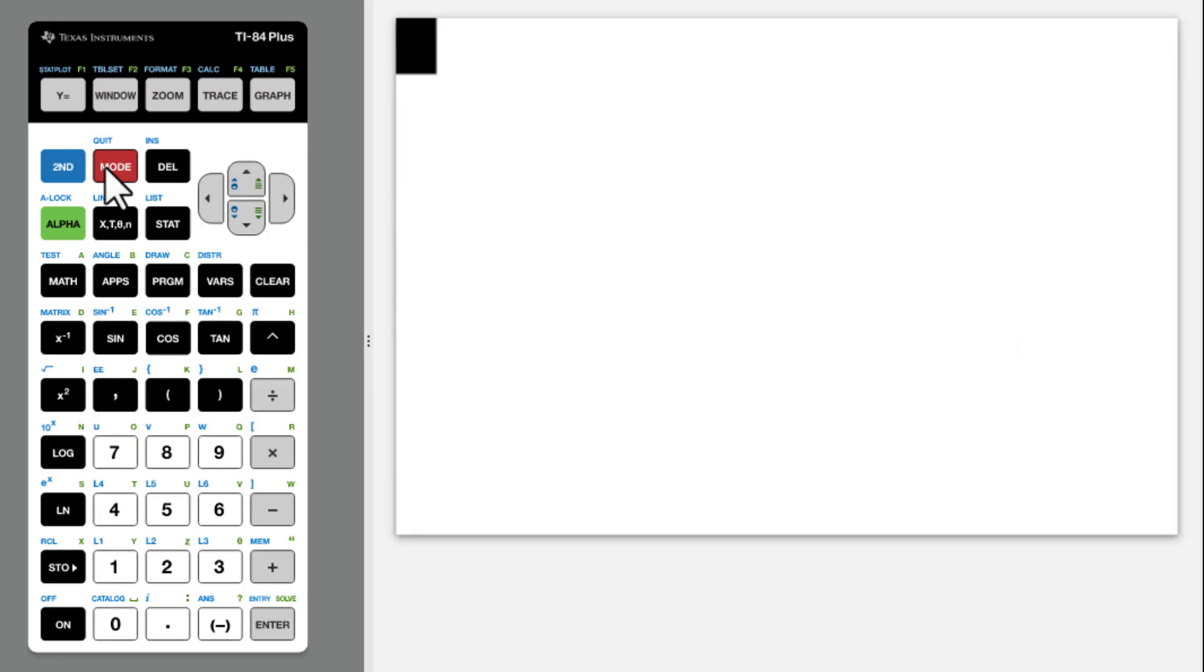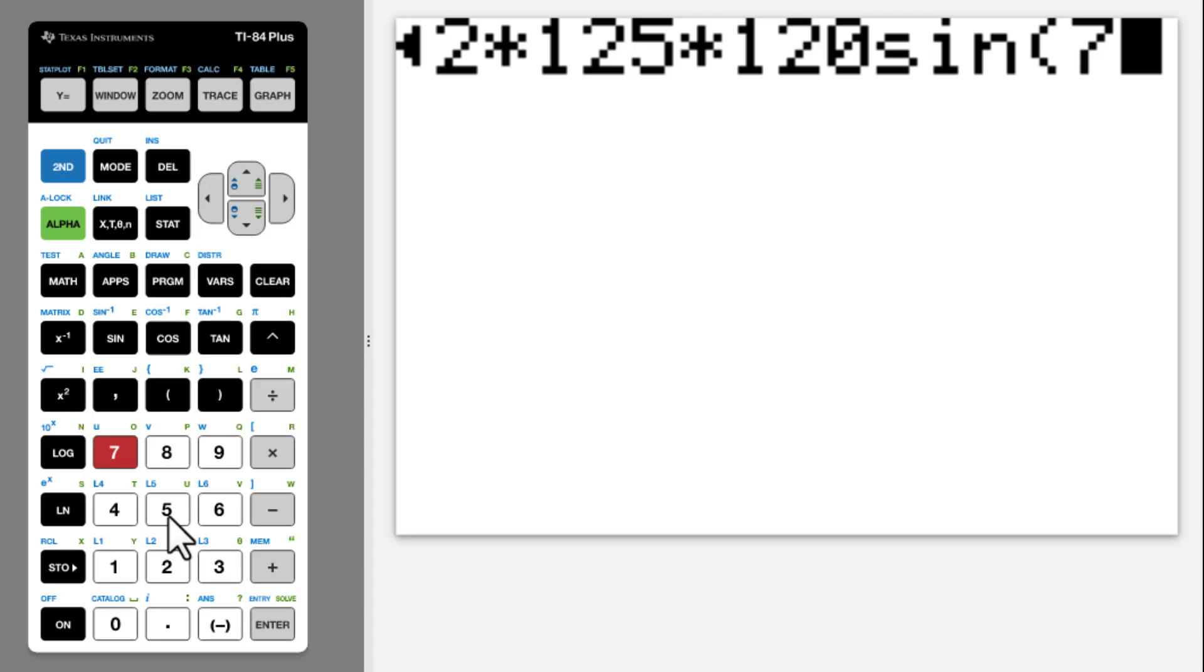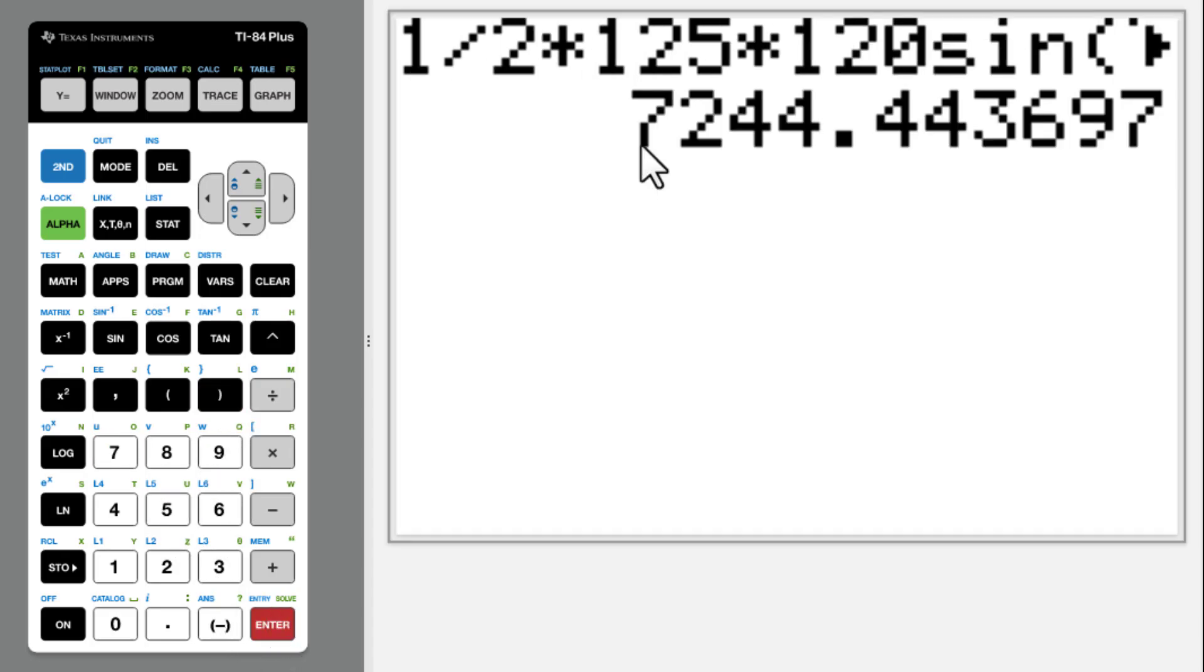Then quit. 1 divided by 2 times 125 times 120 sine 75 degree equals 7244.4436.